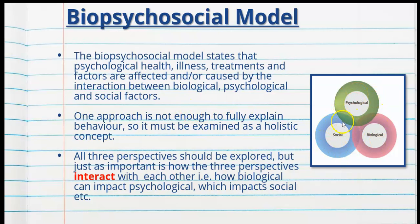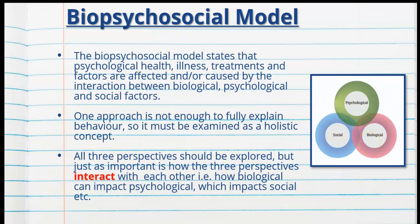There's no point in just looking at the social factors, for example — we could be missing vital information regarding psychological or biological factors. When we use the biopsychosocial model, which is what the whole stage 2 psychology course is built on, we must look at all three factors at once, including how the three perspectives interact with each other: how the biological affects the psychological, how the psychological affects the social, how the social affects the biological, and so on.